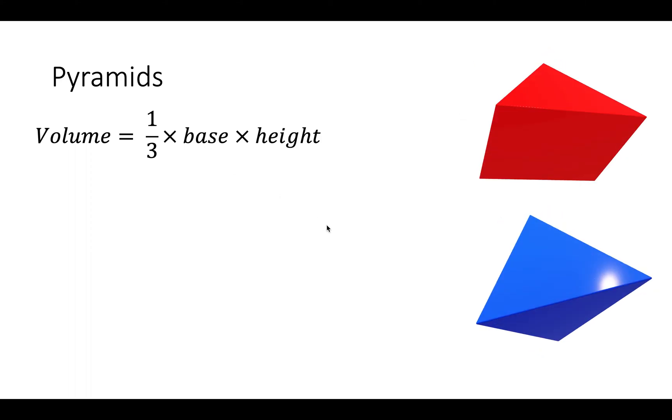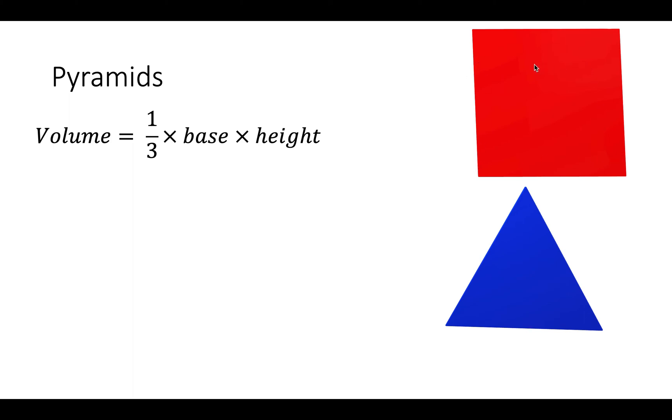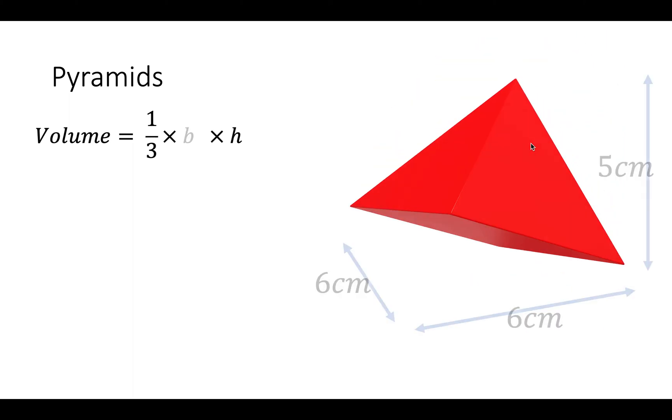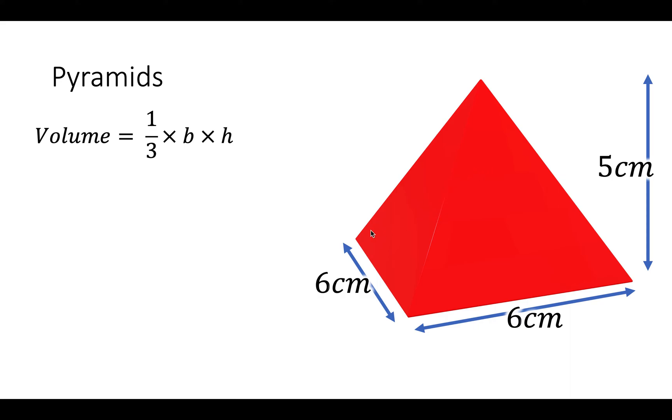So let's see an example. Again, this is the base here. We're looking at this pyramid here. The base is a square, which is 6cm by 6cm. So the area of that square will be 6 times 6, which is 36. So the volume of this pyramid will be given by a third times 36 times 5, which is the height. Again, the 36 is just the area of the base. A third times 36 times 5 is 60cm cubed. And remember the units again.